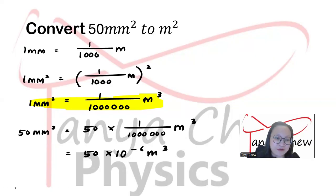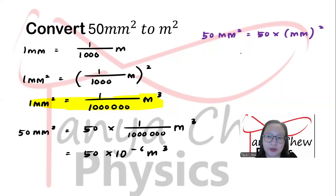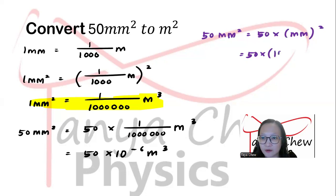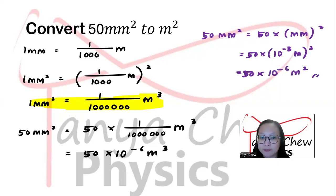Using the prefix method: 50 mm² = 50 × (milli × m)². Milli carries 10⁻³, so (10⁻³)² = 10⁻⁶. Therefore, 50 mm² = 50 × 10⁻⁶ m². Same answer. Note: the unit is meter squared, not meter cubed.